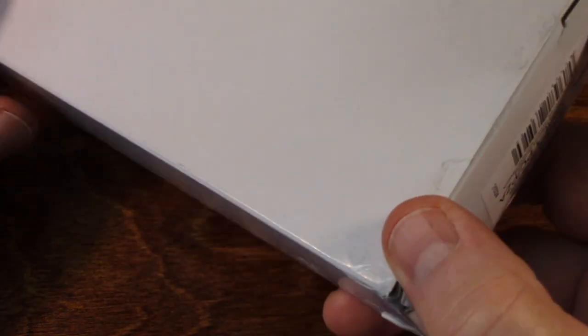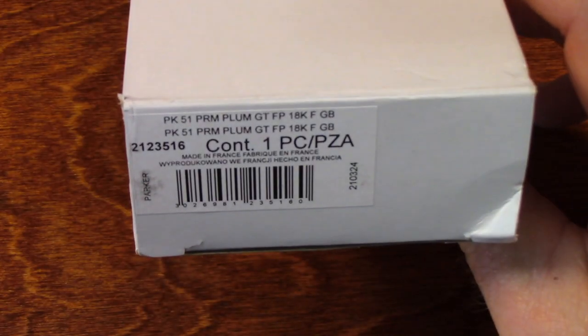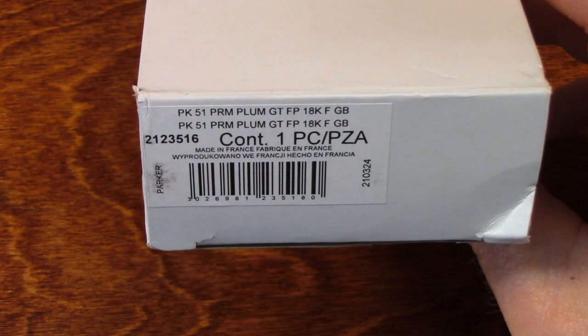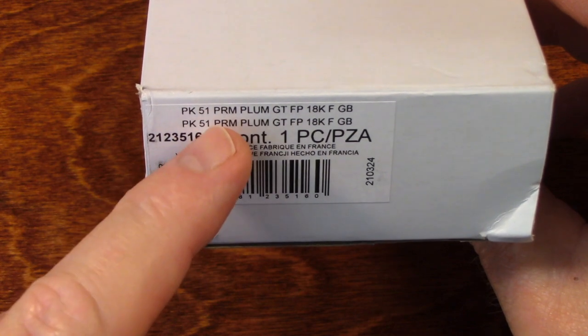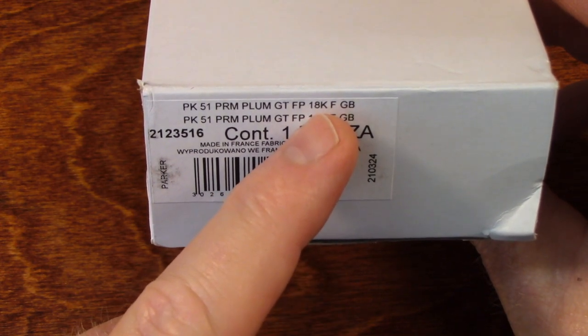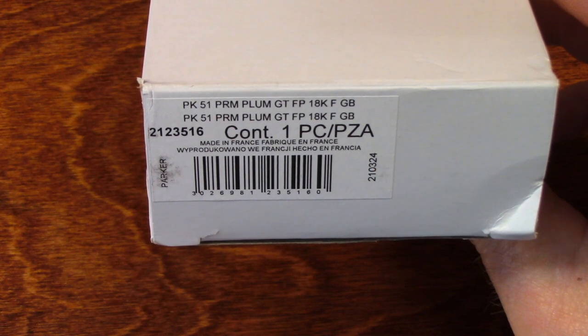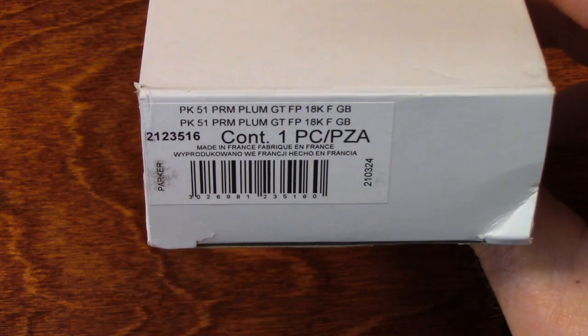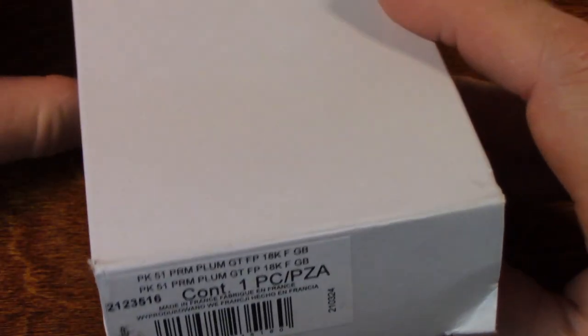So the Parker 51 has been out of production for a long time. Sometime in the future I'm going to do a video dedicated to the 51. But Parker re-released the 51 this year. So I picked one up. It's a Parker 51. The color is plum. It's got an 18 karat gold nib. And it's a fine. F stands for fine. You can get these in fines or mediums.